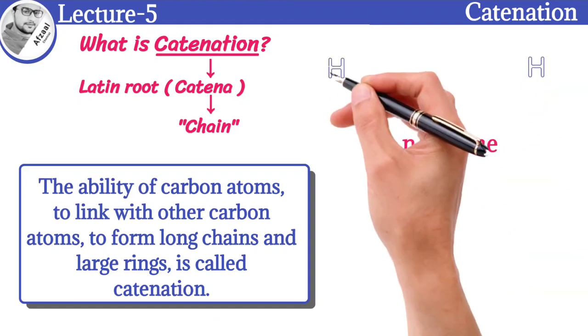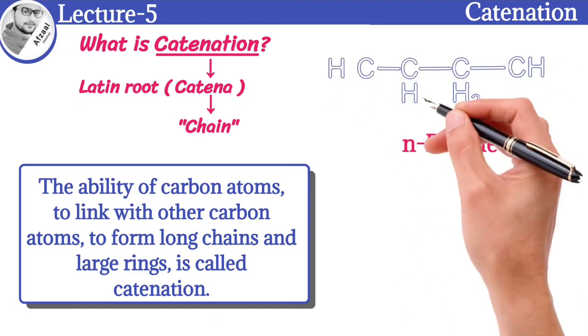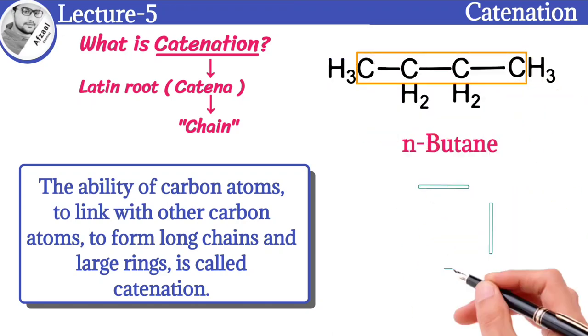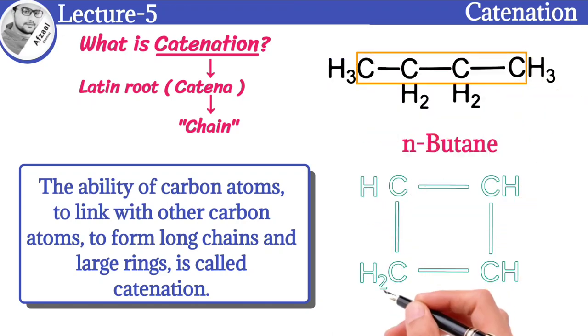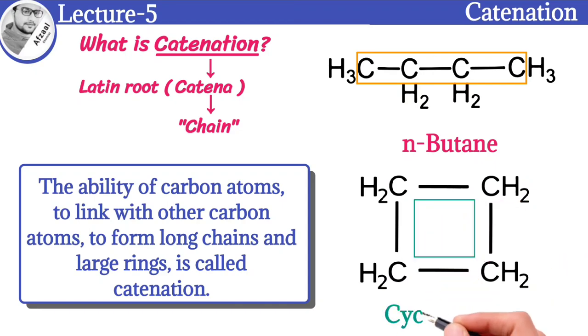For example, in N-butane there are four carbon atoms linked with each other to form a straight chain. The same number of carbon atoms link to form a ring structure that is known as cyclobutane. So both compounds exhibit catenation.